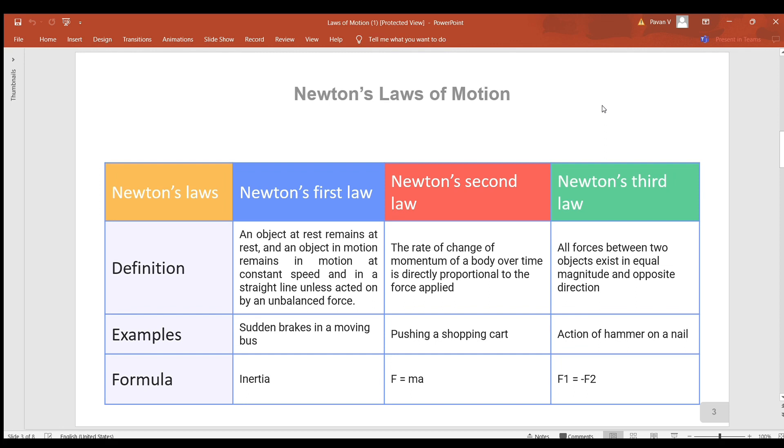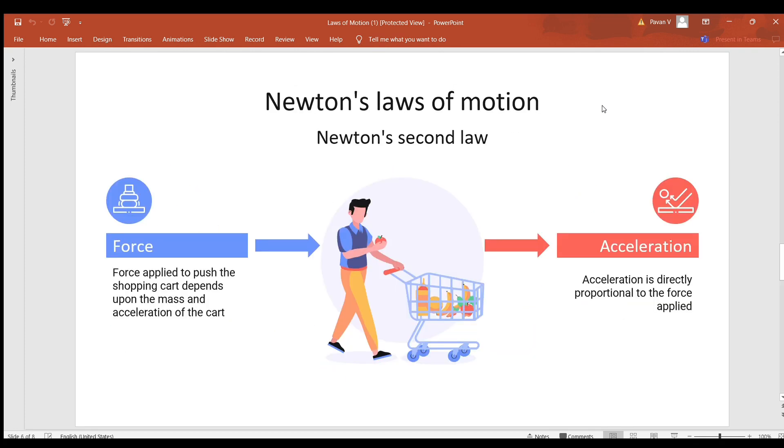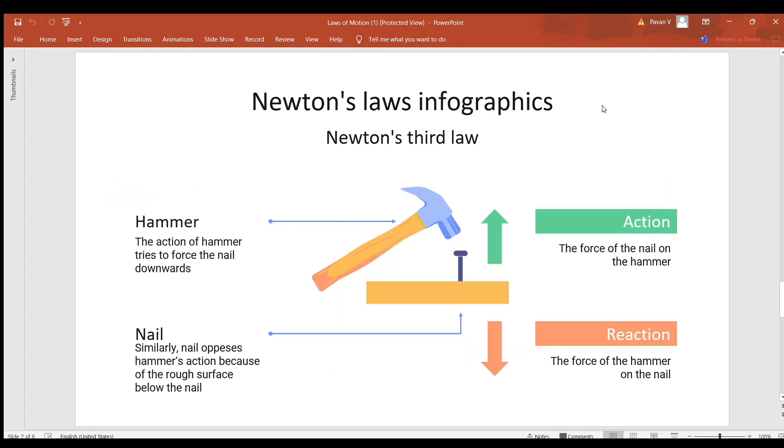Newton's third law of motion: all forces between two objects exist in equal magnitude and opposite direction. For example, hammer and nail - the action of the hammer tries to force the nail downwards.